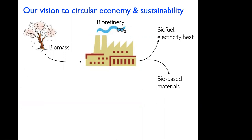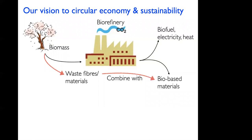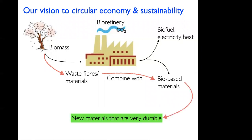In addition to the conventional biomass–biorefinery–biofuel–bio-based materials loop, we propose taking waste fibers and waste materials and combining them with bio-based materials to create very durable materials — waste fiber reinforced bio-based materials. We aim not to create easily biodegradable materials; we actually want durability. At end of life, instead of composting back to CO₂, we want to recycle these durable new materials back into their original waste fibers and bio-based starting materials, creating a second loop.